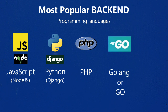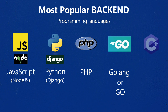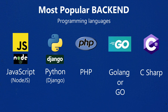Golang, also called Go, is a fast-growing programming language designed by Google. Although it's still a quite young language, it already reached the top 10 most loved programming languages in 2022. C-sharp is a general-purpose language created by Microsoft back in 2001. It is based on C and C++ programming languages, so it's easier to learn when you already have a basic understanding of those languages.